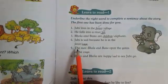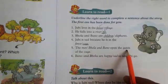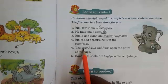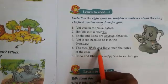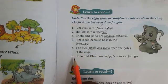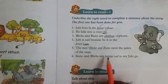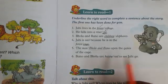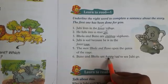Now come to number 5. The men — Bola and Bano open the gates of the cage. Who opened the gate, men or Bola and Bano? Bola and Bano open the gates. Now number 6: Bola and Bano are happy or sad to see Juby go? Yes, Bola and Bano are very happy to see Juby go. We have finished this exercise.